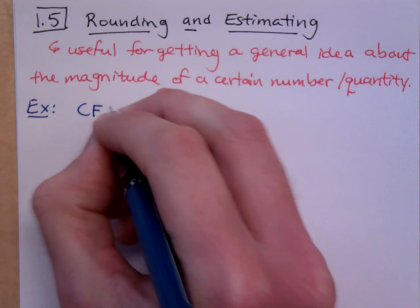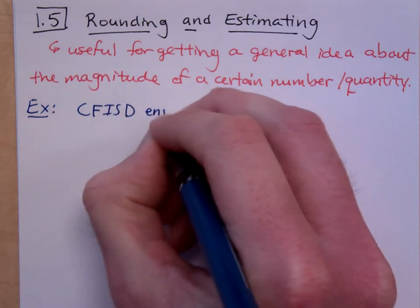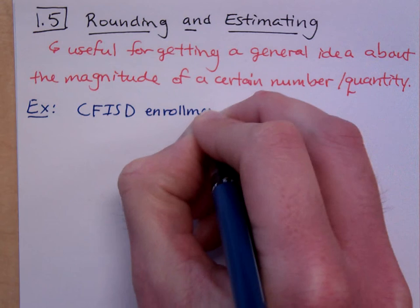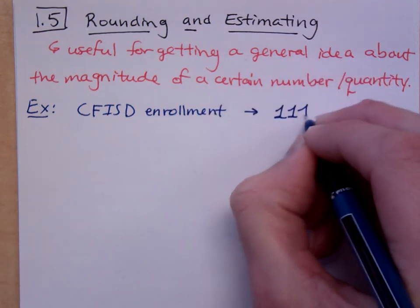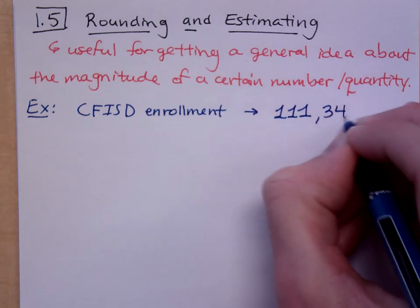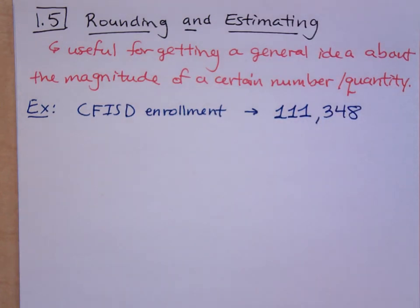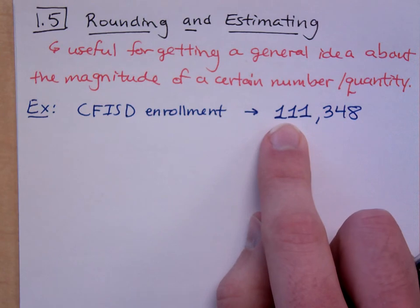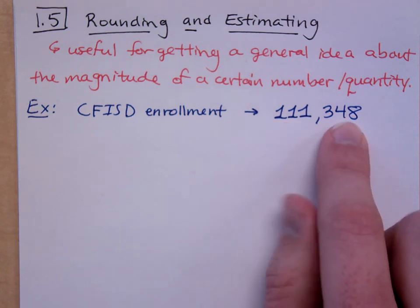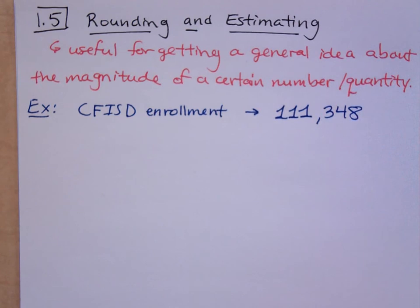If we talk about the current enrollment in Cypher ISD, the current enrollment is this number. We can accurately read this number as one hundred eleven thousand, three hundred forty-eight. Now, if you were talking to your friend on the phone and trying to talk about the enrollment of Cypher ISD, are you going to say it's one hundred eleven thousand, three hundred forty-eight?